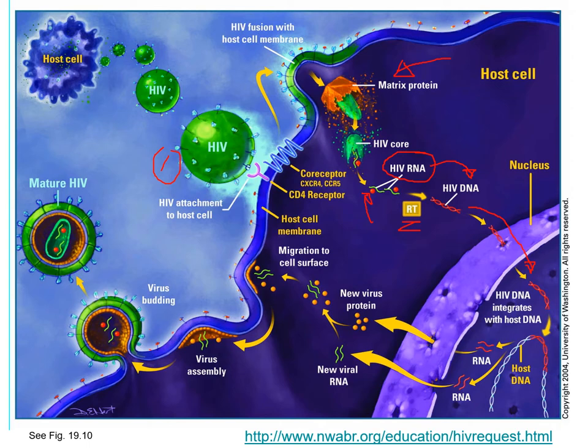Eventually the integrated viral DNA gets activated and we make viral RNA. That RNA exits through a nuclear pore, finds ribosomes, and the ribosomes translate it into proteins. Those proteins and viral genomes eventually form new viral particles - you can see the virus budding off, ready to infect somebody else.